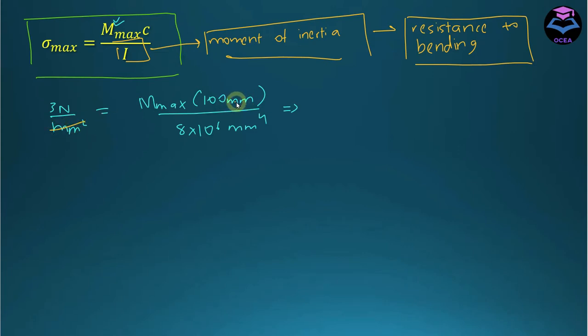Working through the calculation: 3 × 100 / (8×10⁶) gives us 24×10⁴ N·mm. Now converting this to Newton-meters, M_x equals...